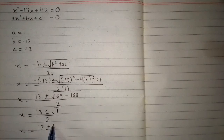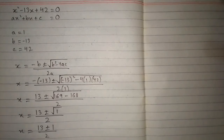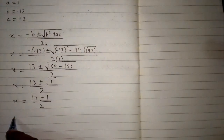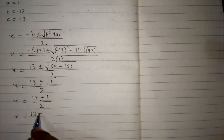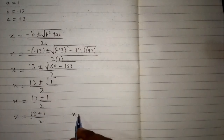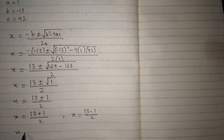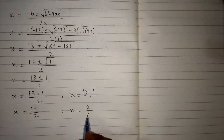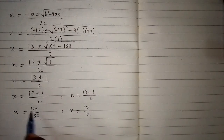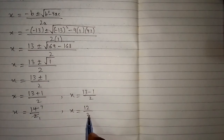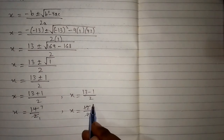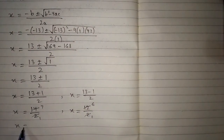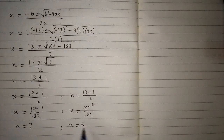So we have 13 plus minus 1 upon 2. This gives us 2 values of x: x is equal to 13 plus 1 upon 2, and x is equal to 13 minus 1 upon 2. So we get 14 upon 2 and 12 upon 2, giving x is equal to 7 and x is equal to 6. These are the roots or solution of the given equation.